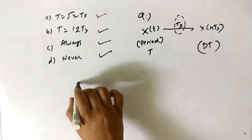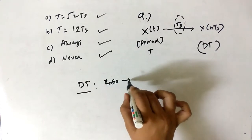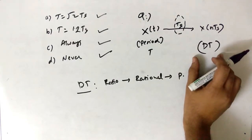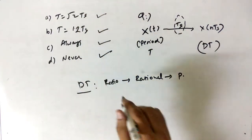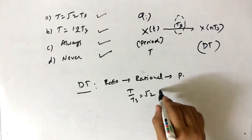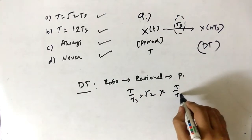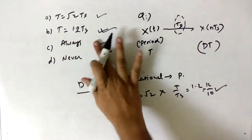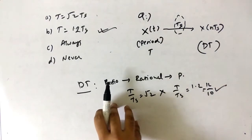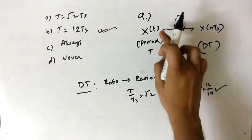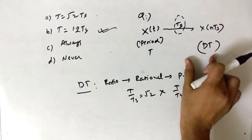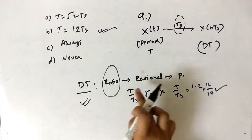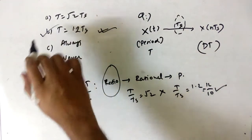The concept for discrete-time signals is: the ratio T/Ts must be rational for the signal to be periodic. Checking the options — if T/Ts = √2, that is irrational, so not periodic. If T/Ts = 1.2 = 12/10, that is rational, so the signal is periodic. The answer is (b). The key rule: always check the ratio T/Ts; if it is rational, the discrete signal is periodic.